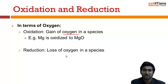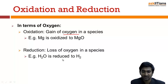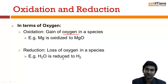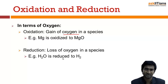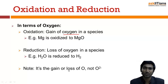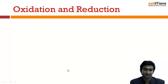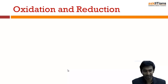Reduction is the loss of oxygen in a species. For example, water is reduced to H₂ and O₂ — here there is loss of oxygen, which is why this is a reduction process. So with respect to oxygen: gain of oxygen is oxidation, and loss of oxygen is reduction. Next, we'll learn the definitions in terms of hydrogen.